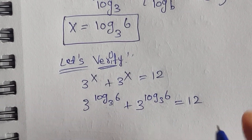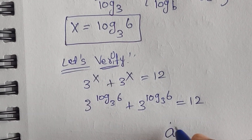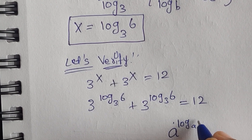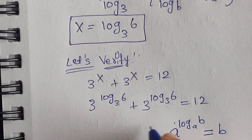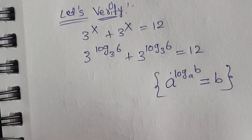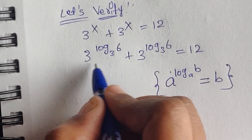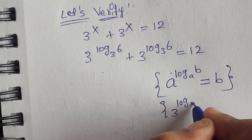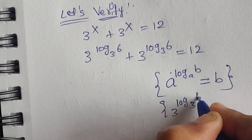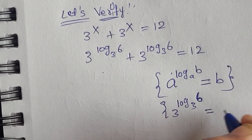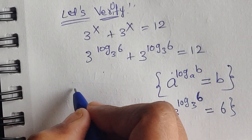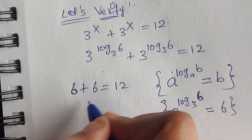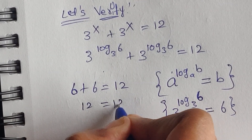Here we can use the formula: a to the power of log base a of b equals b. Applying this formula, 3 to the power of log base 3 of 6 equals 6. So we get 6 plus 6, which equals 12. And 12 equals 12 — so this is true.